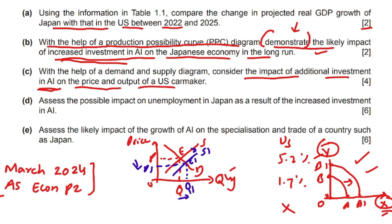After drawing the graph, you also need to explain it. Say: the initial equilibrium is at E where price is P and quantity is Q. An increase in investment in AI will increase the supply of cars, so the new equilibrium moves to E1 where price decreases from P to P1 and quantity/output increases from Q to Q1.